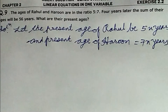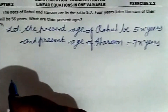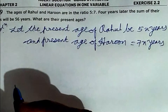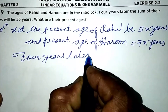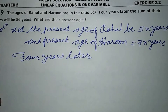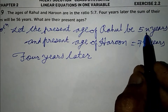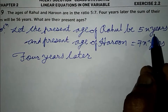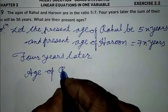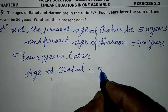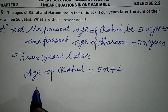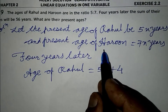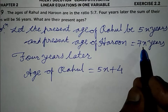Four years later, the age of Rahul will be 5x plus 4, and the age of Haroon will be 7x plus 4.